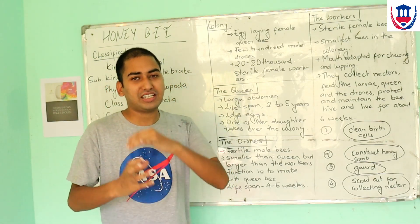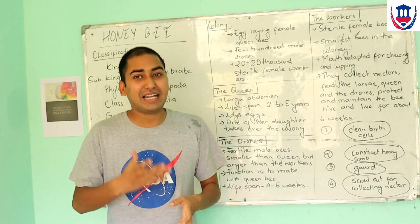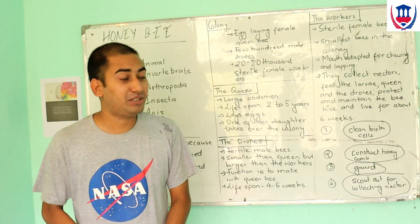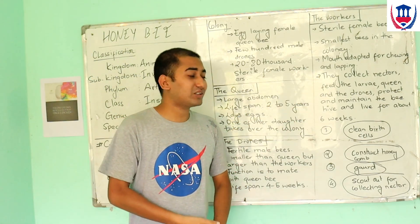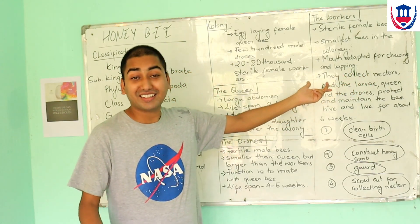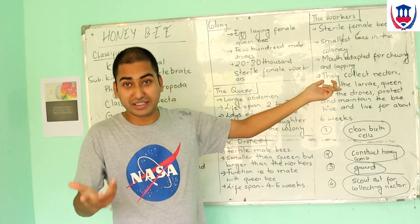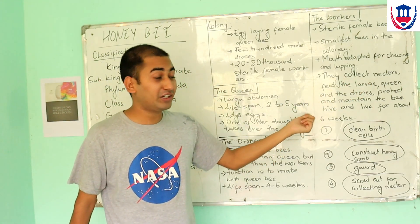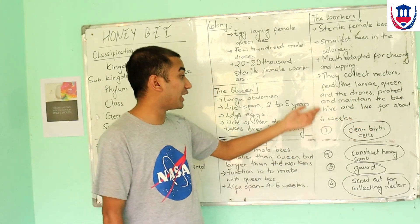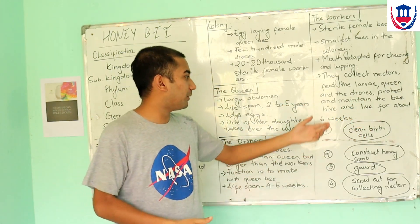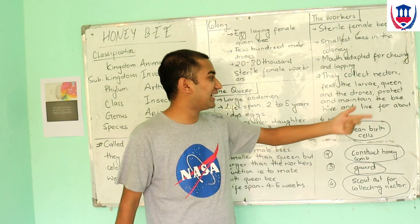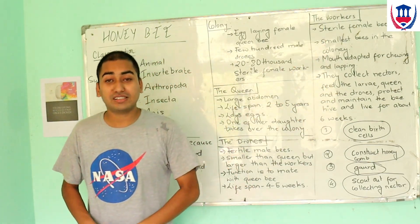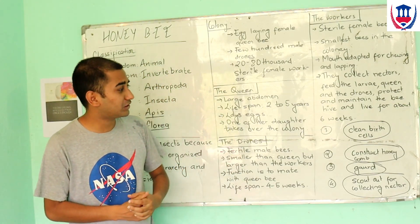If you have a hive, workers do all the work. Their mouth is adapted for chewing and lapping nectar. Worker bees are responsible for collecting nectar, feeding the larvae, feeding different types of larvae, keeping the drones, maintaining the hive, keeping the plants, and maintaining the temperature. They carry out all functions necessary for the colony's survival.